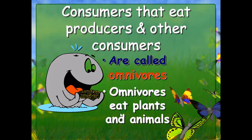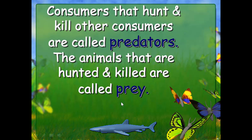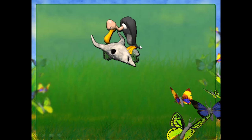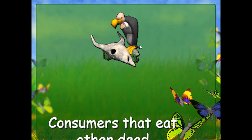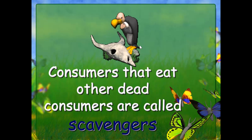Consumers that eat producers and other consumers are called omnivores — they can eat either plants or animals. Consumers that hunt and kill other animals are called predators, and the animals they hunt are called prey — that's the predator-prey relationship. Consumers that eat other dead consumers are called scavengers.